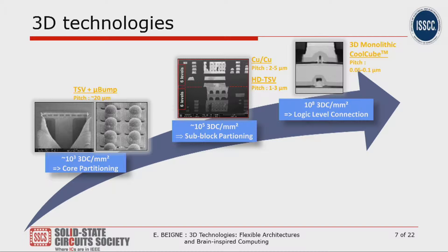On the right we see the densest technology available today, which is 3D monolithic — also called CoolCube. The pitch is really very small, and we can think about stacking transistors over transistors, giving a really high-density interconnect from which some of our architectures can greatly benefit.